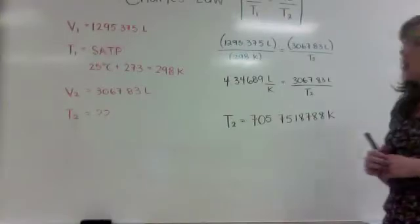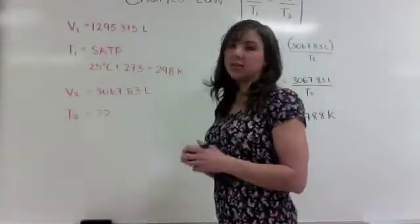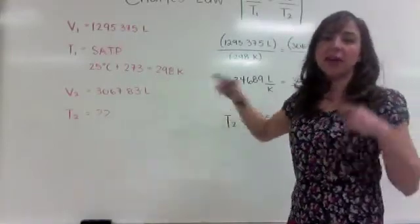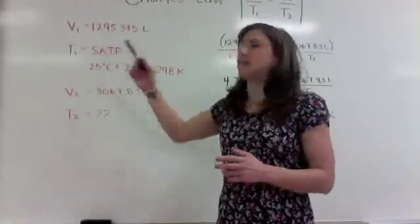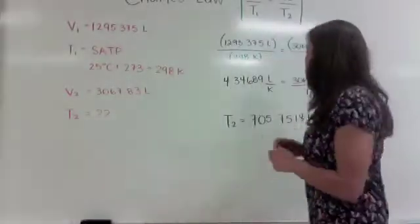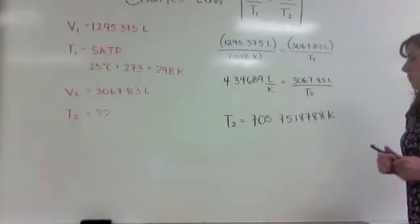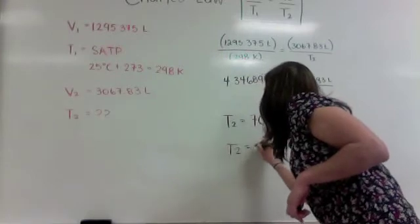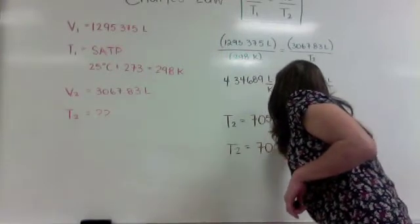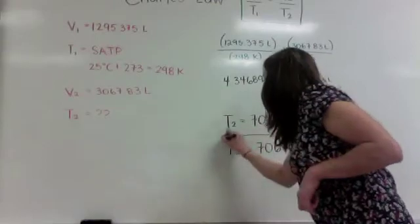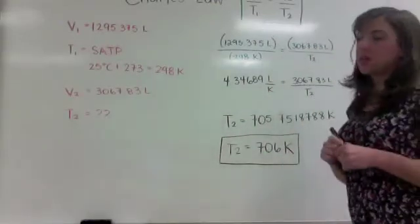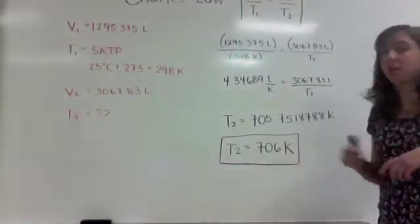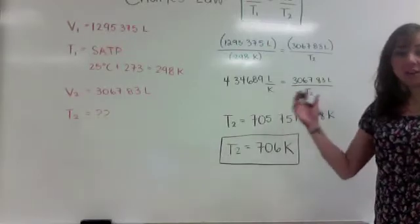Remembering sig figs: since SATP is 25 degrees Celsius, we can assume 25.0, which gives 298 Kelvin — so we use 3 sig figs. Rounding 705.75 to 3 sig figs gives us 706 Kelvin. So to achieve a volume of 3067.83 liters, you'd have to raise the temperature to 706 Kelvin — which is really hot, but that's a lot of air.